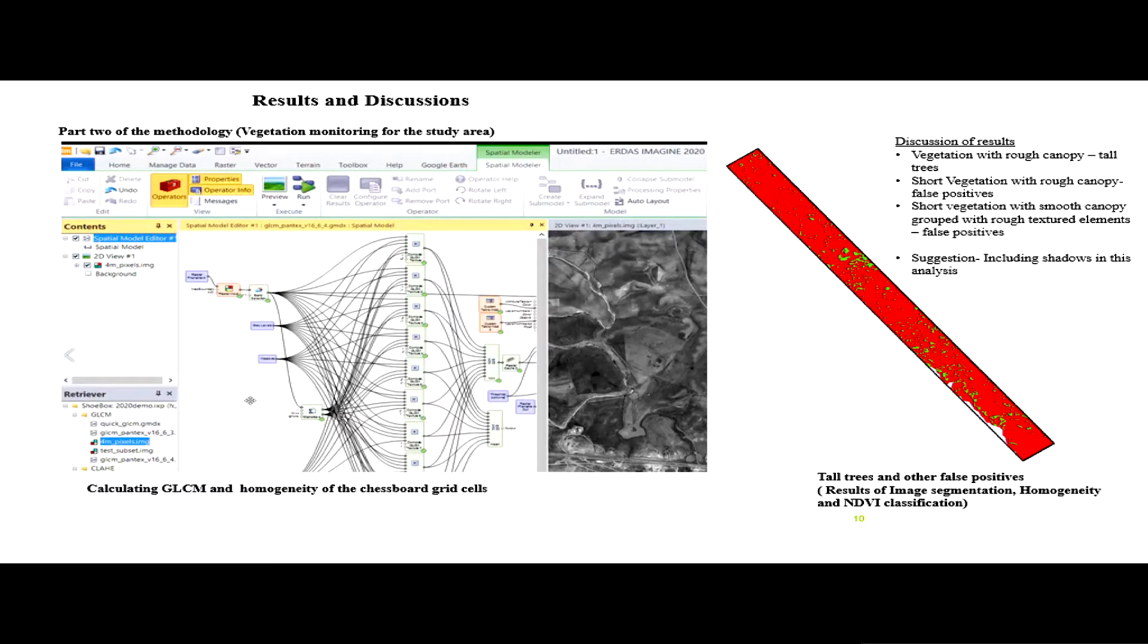There is vegetation with rough canopy, which are tall trees. But it could also be short vegetation with rough white canopy—those are false positives. Or short vegetation with smooth canopy grouped with rough textured elements like roads—those are also false positives.